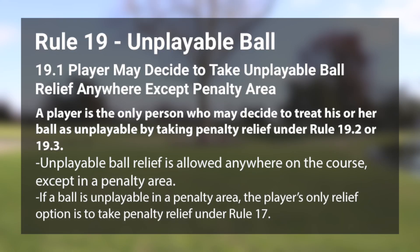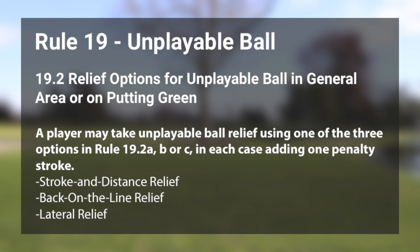In 19.1, they discuss the fact that a player may decide to take unplayable ball relief anywhere except a penalty area. So pretty self-explanatory there — you can take your one penalty stroke relief anywhere other than a penalty area.